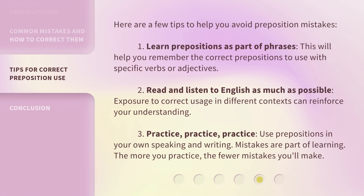Here are a few tips to help you avoid preposition mistakes. 1. Learn prepositions as part of phrases — this will help you remember the correct prepositions to use with specific verbs or adjectives. 2. Read and listen to English as much as possible; exposure to correct usage in different contexts can reinforce your understanding. 3. Practice, practice, practice. Use prepositions in your own speaking and writing. Mistakes are part of learning — the more you practice, the fewer mistakes you'll make.